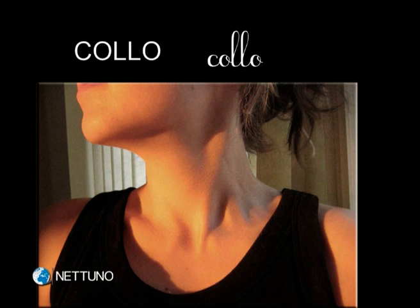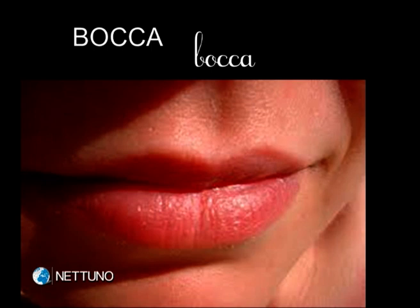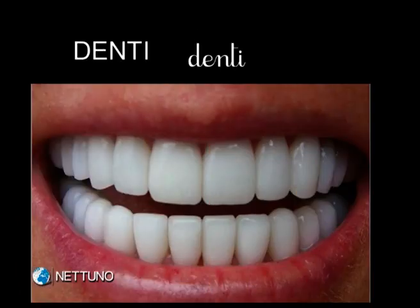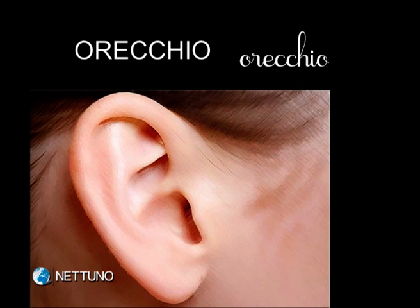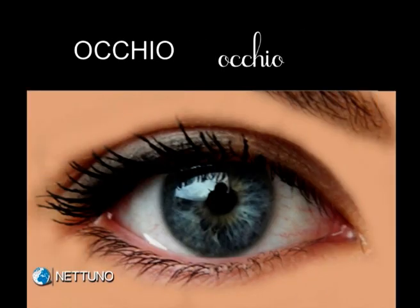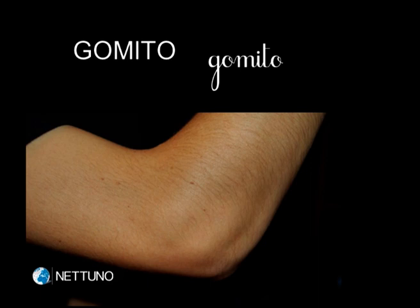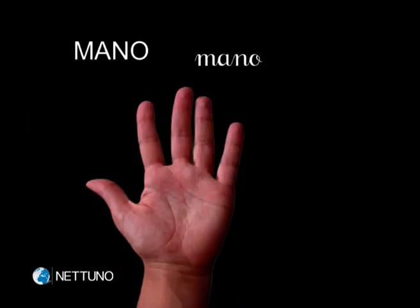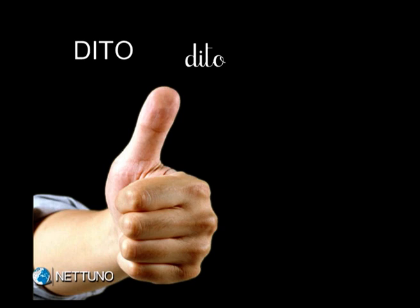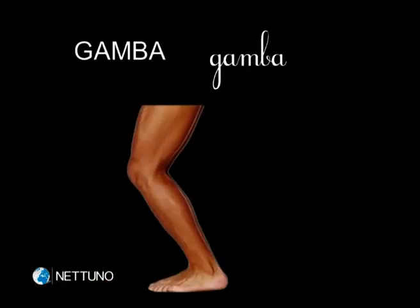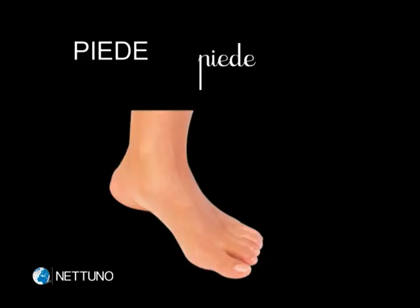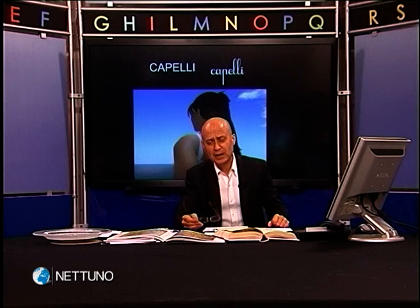Collo. Bocca. Denti. Orecchio. Occhio. Gomito. Mano. Dito. Gamba. Piede. Impariamo ora altri nomi di parti del corpo.